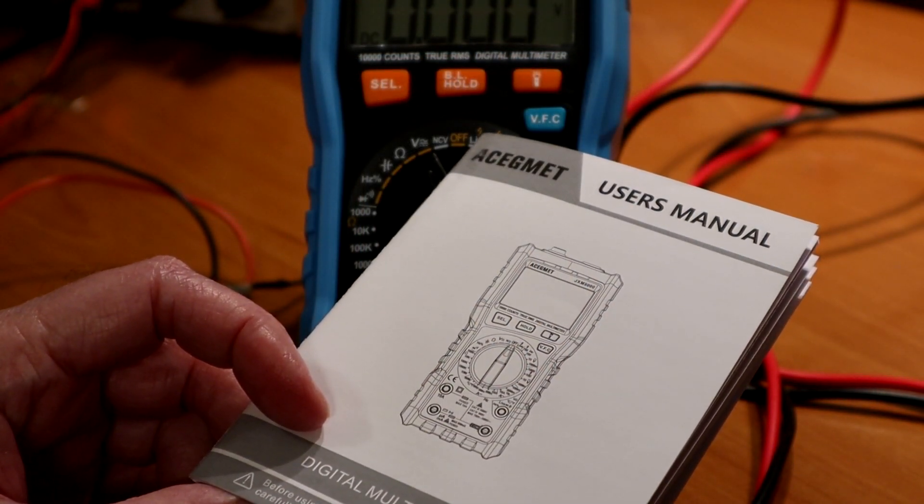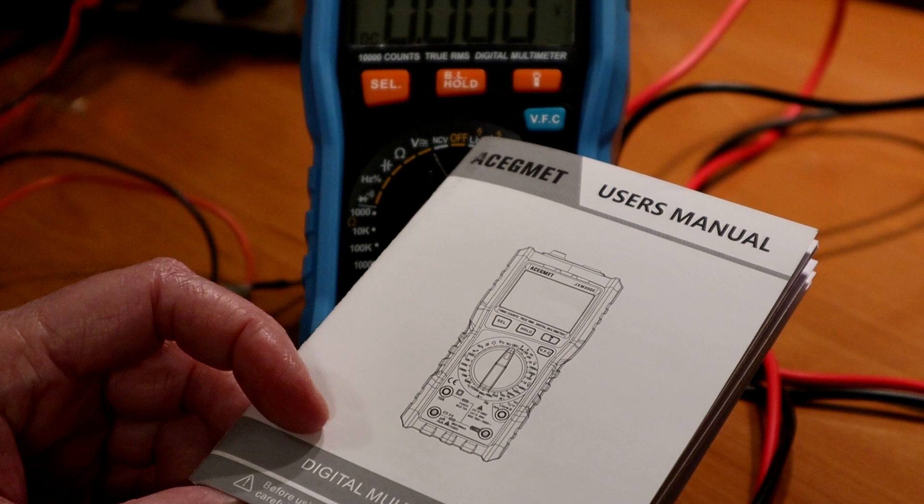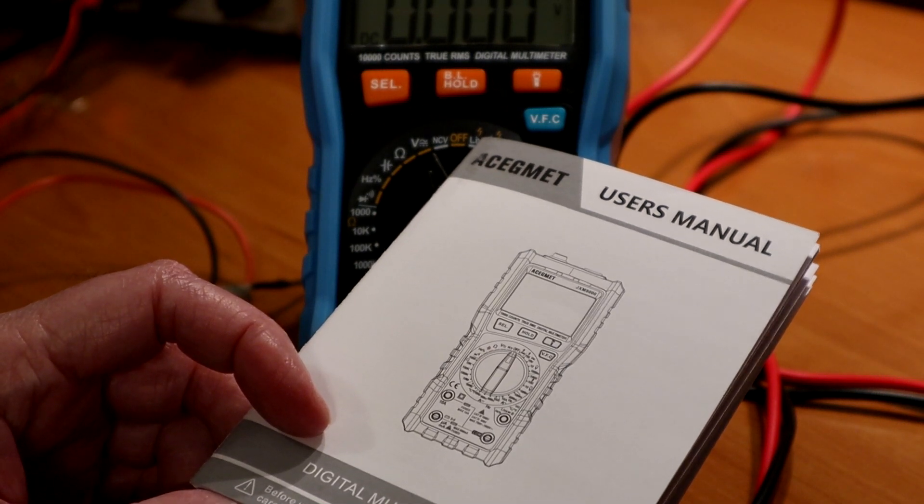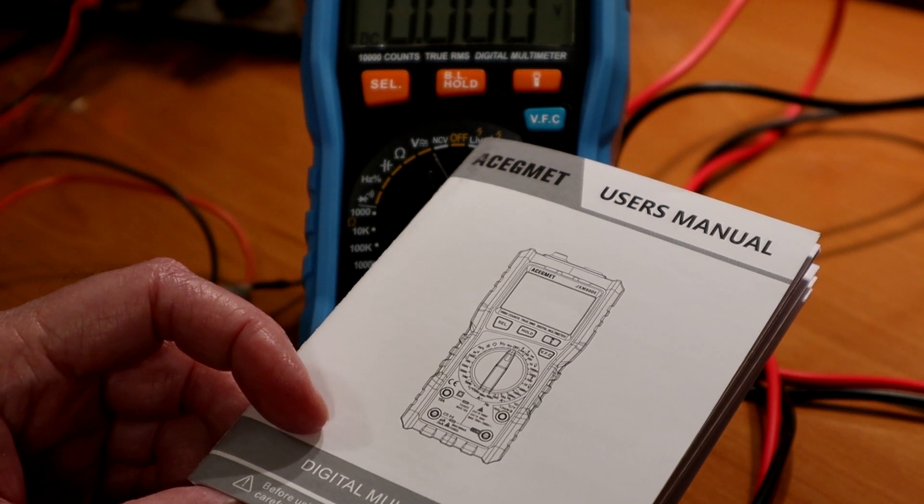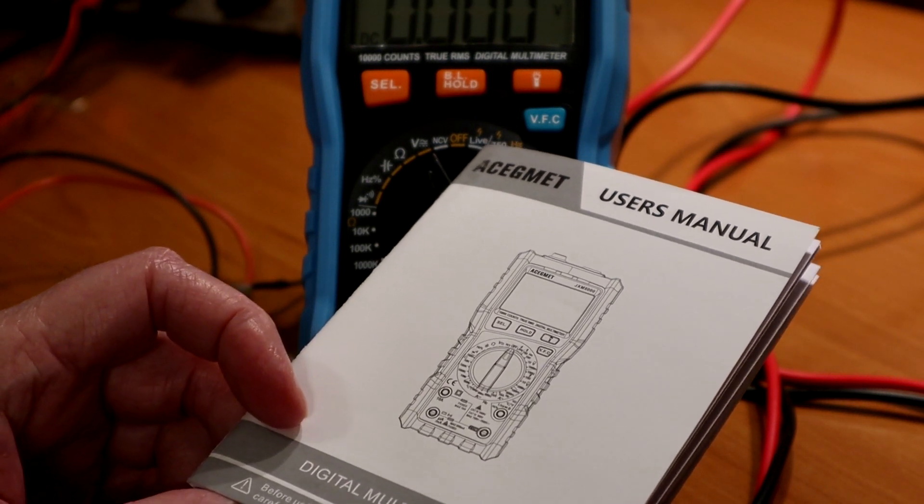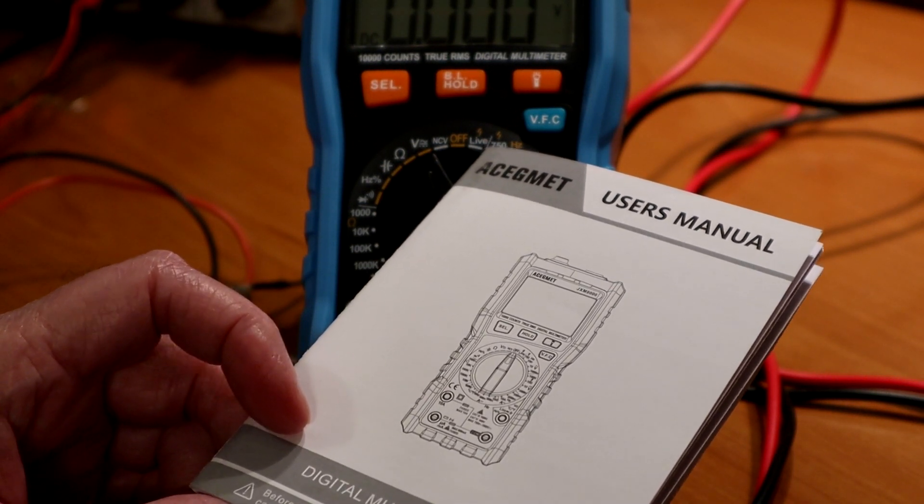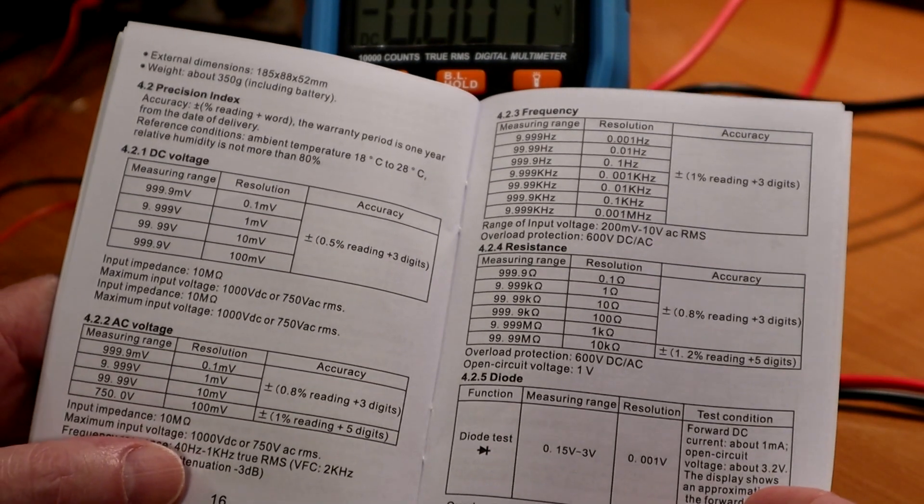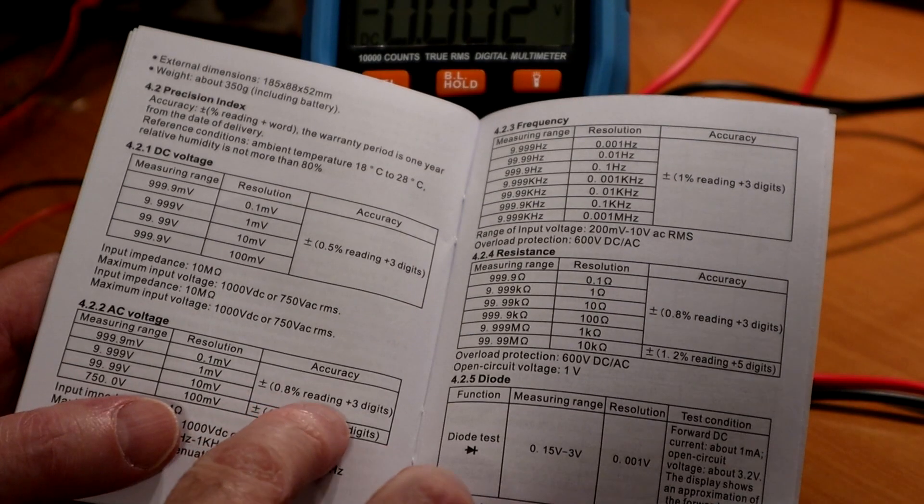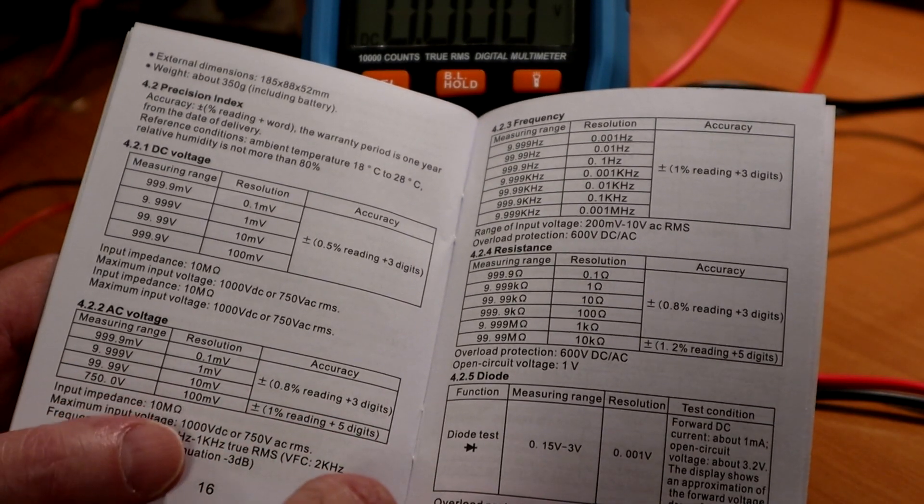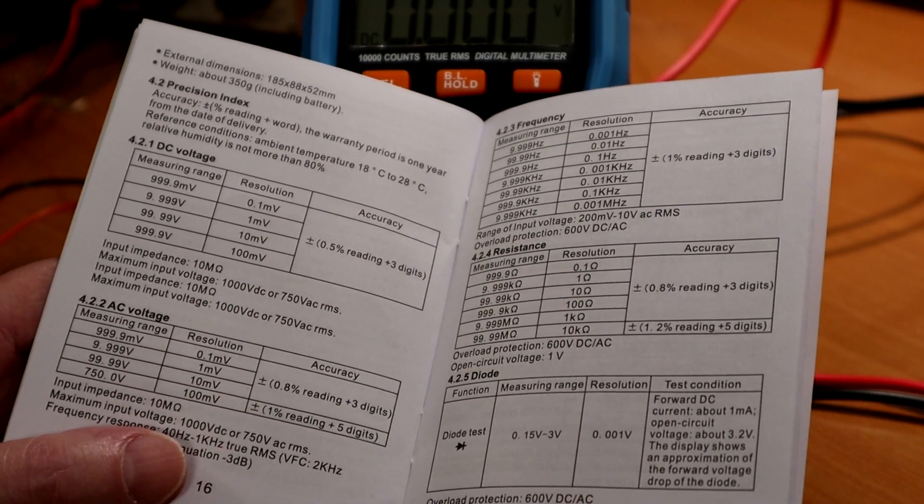Okay, so let's get into the performance a little bit more. This, remember, is a $34 meter, but it's really amazing for $34. I would definitely recommend it, based on my experience so far. This is a user manual, and it has, of course, the obligatory specifications for the thing, plus or minus 0.8 percent, plus three digits.